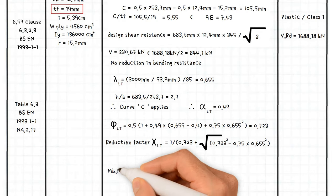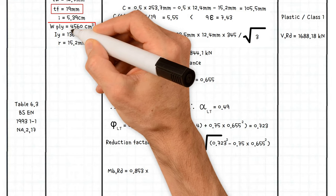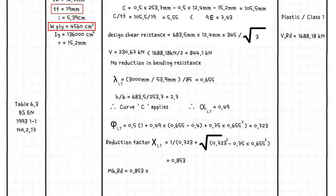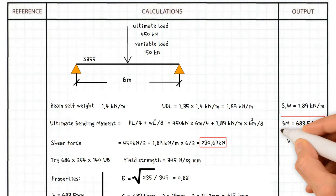Consequently, the bending moment resistance equals the reduction factor 0.853 times the major axis section modulus of the beam based on its classification, which is plastic section modulus for Class 1 or 2, which is 4560 times 10 to the power of 3 millimeters cubed times the yield strength of the steel 345 divided by 10 to the power of 6. This gives us a value of 1342.25 kilonewton meters, which is greater than applied bending moment 683.5 kilonewton meters. Therefore, the bending moment resistance of the section is acceptable.